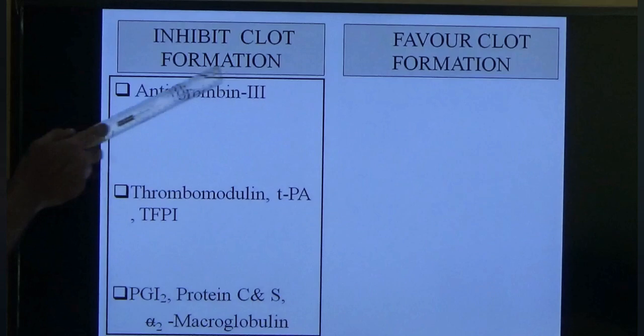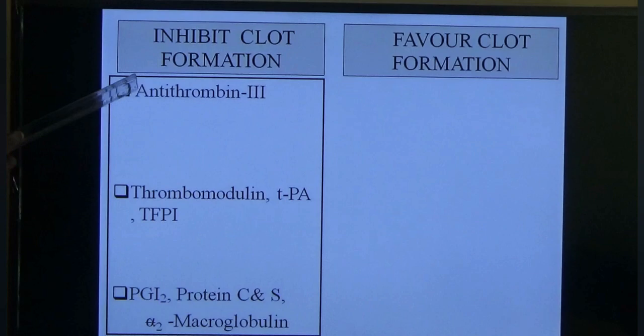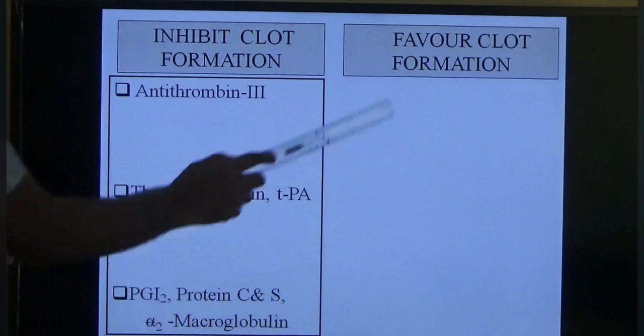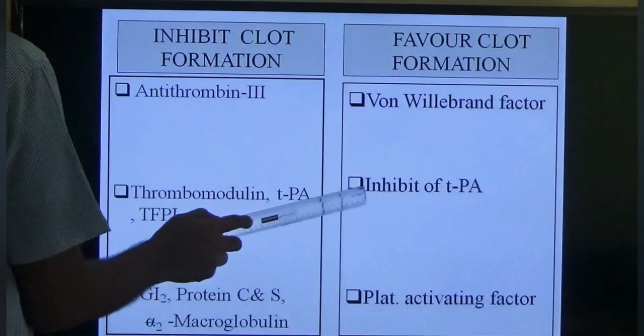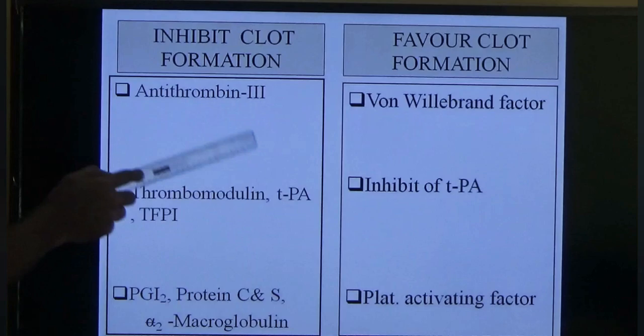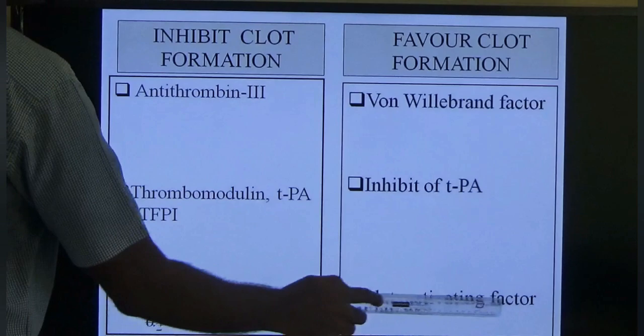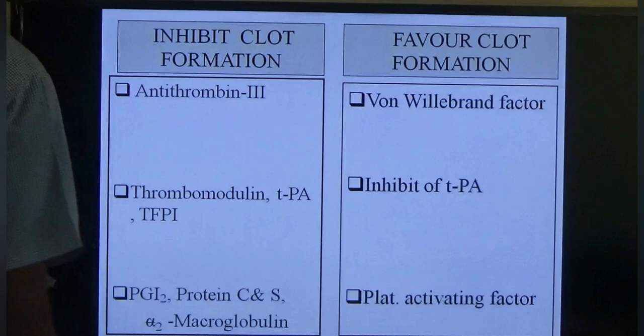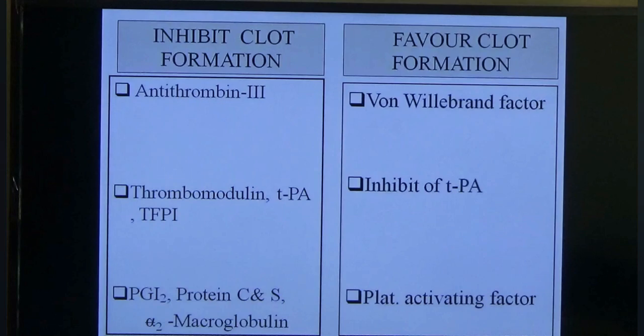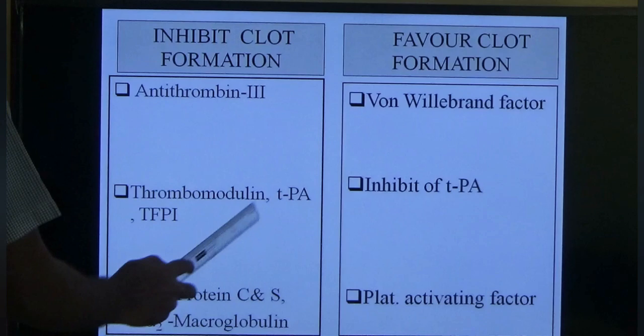For the thrombotic side — favoring clot formation — remember 'VIP': von Willebrand factor, inhibition of TPA (tissue plasminogen activator), and platelet activating factor. These three favor clot formation. If endothelium is normal, antithrombic properties are active; if endothelium is injured, thrombotic properties are activated.